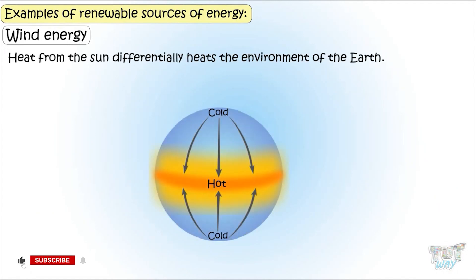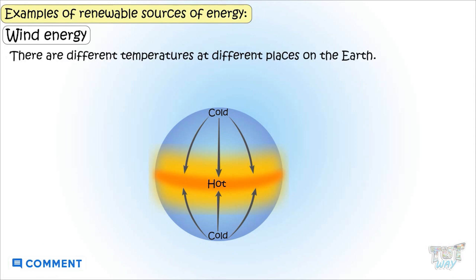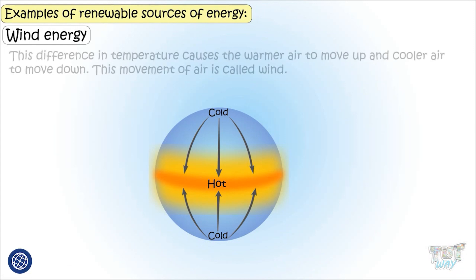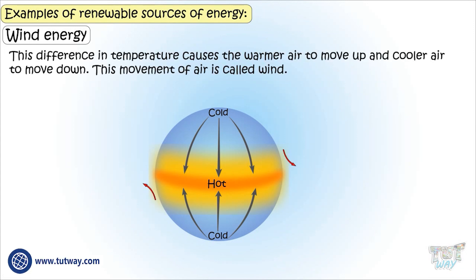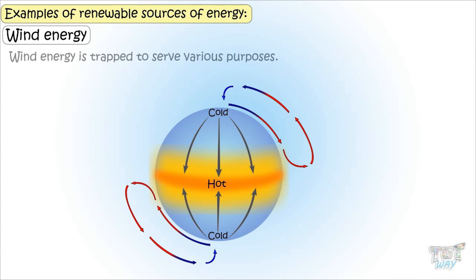Heat from the Sun differentially heats the environment of the Earth — the Earth's atmosphere and Earth's surface are unevenly heated. There are different temperatures at different places on Earth, and this difference in temperature causes warmer air to move up and cooler air to move down. This moving of air is called wind, and this wind energy is trapped to serve various purposes.